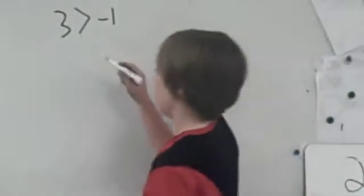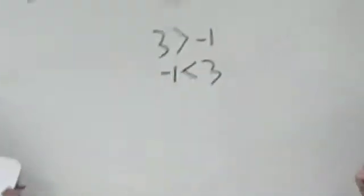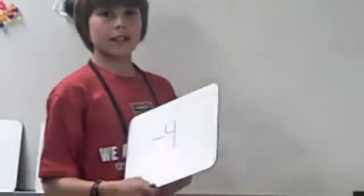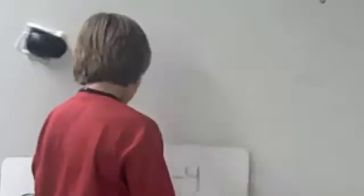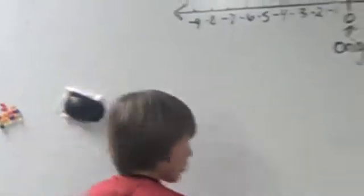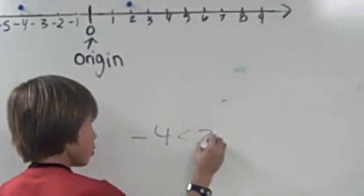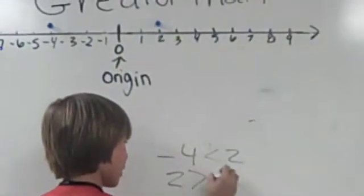Our next example: if you are left on the number line, negative four is less than two. You would write this as negative four is less than two, or two is greater than negative four.